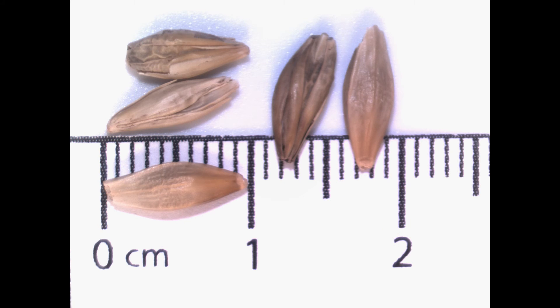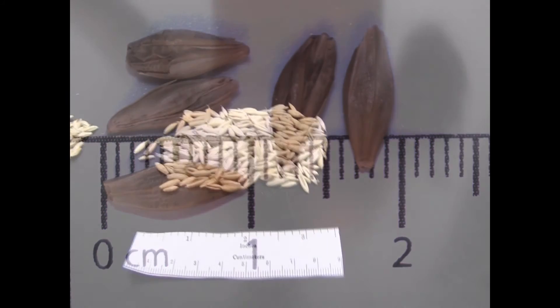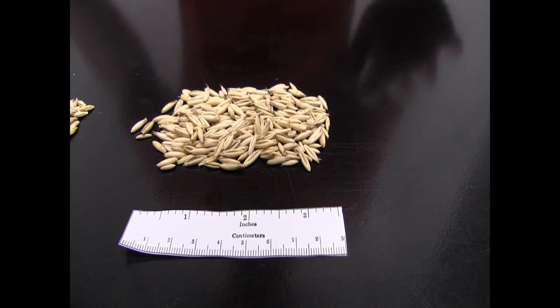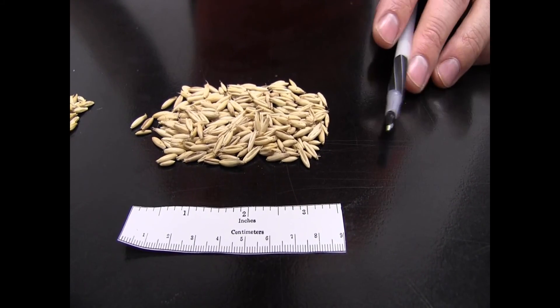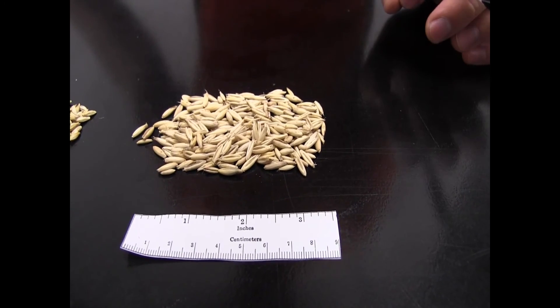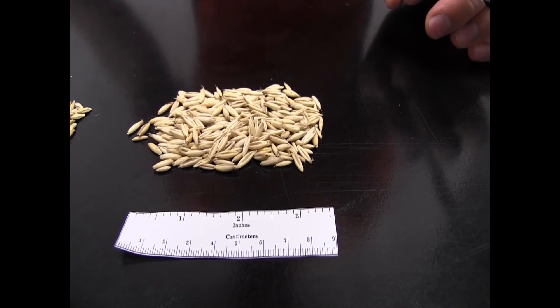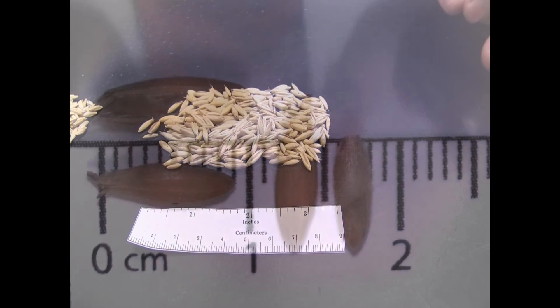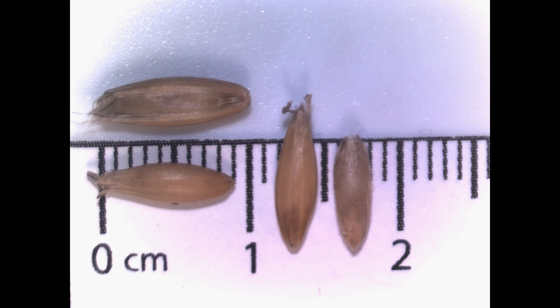Lastly, we have oat. Overall, the oat seed is going to be very slender in shape — it's one of the larger seeds among our small grains — and it has a very light color.